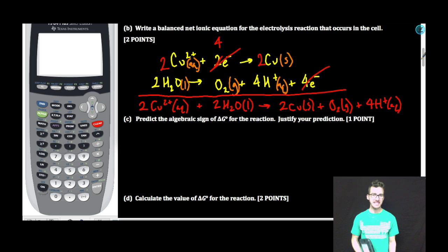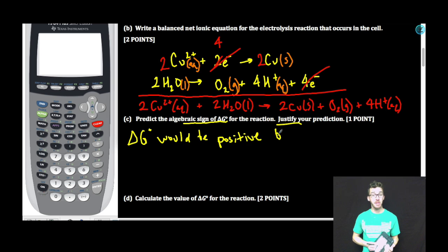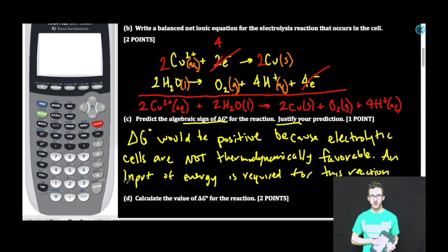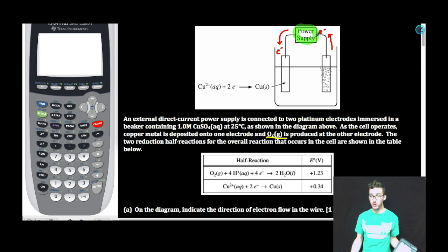Part C, predict the algebraic sign of ΔG for the reaction. Justify your prediction. All right, so let's first come up with an algebraic sign for ΔG. ΔG would be positive. Here comes the justification, because electrolytic cells are not thermodynamically favorable. An input of energy is required for this reaction to proceed as written. How do I know it's an electrolytic cell? Power supply required.